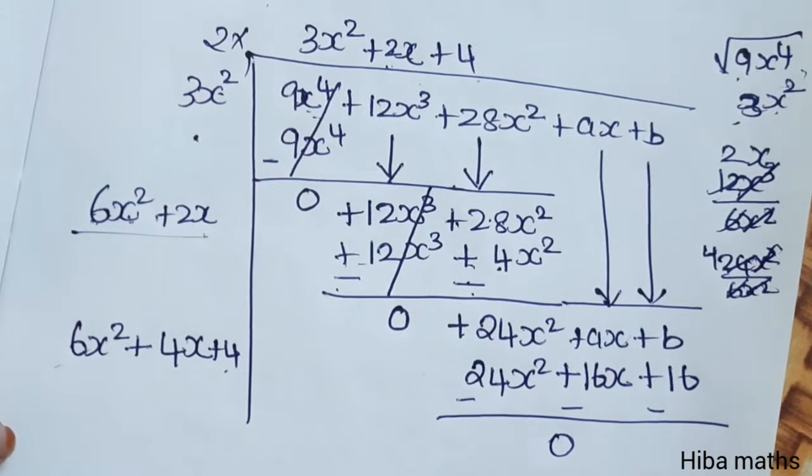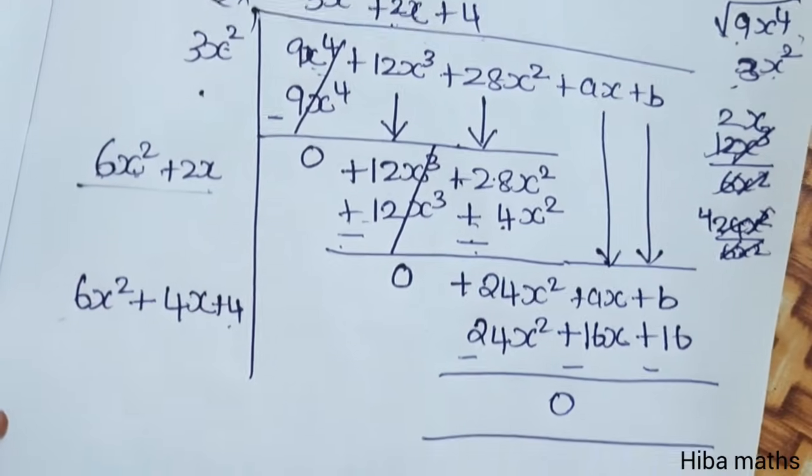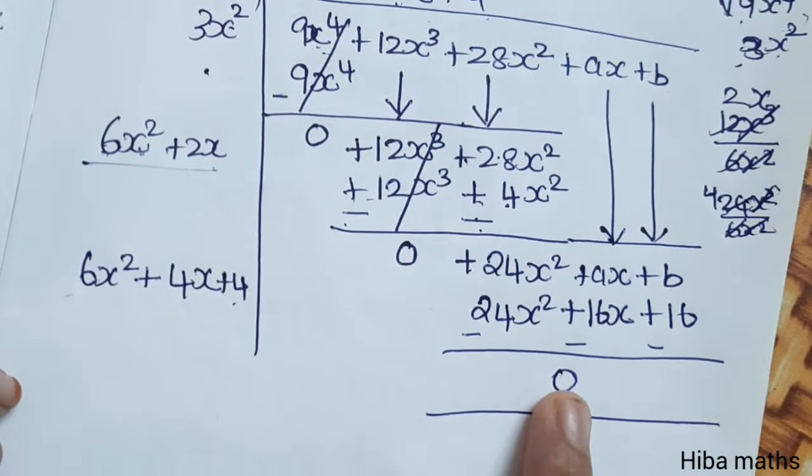Then we can get 0, because we can get the perfect square. Then we can get 0. Now we have the a value and b value.